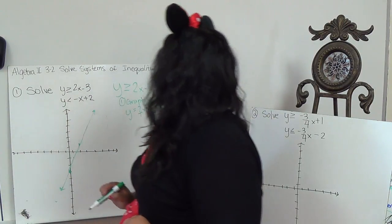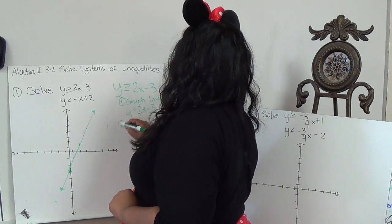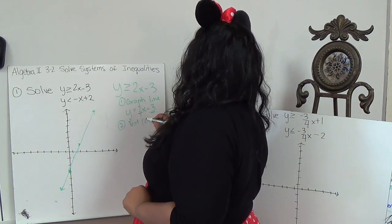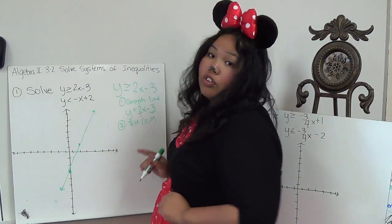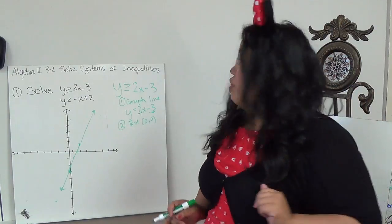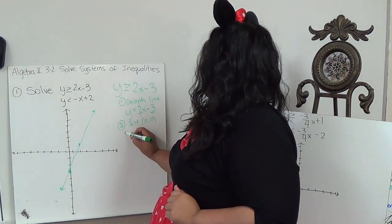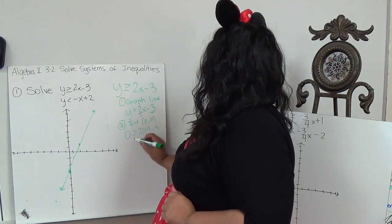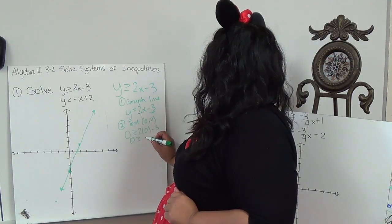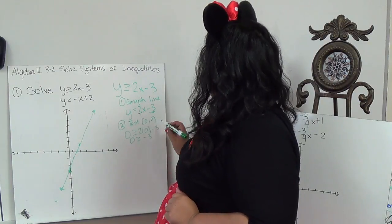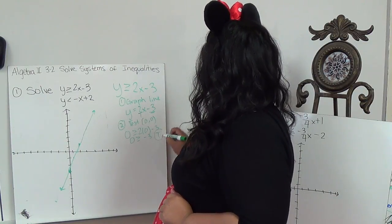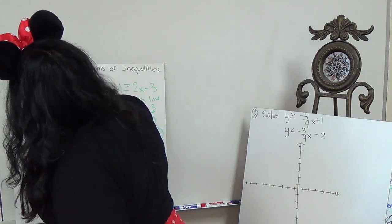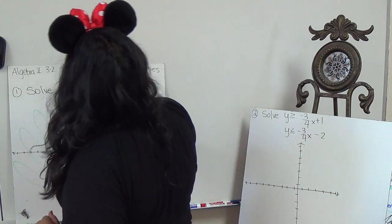So now it's a matter of the second step is to test. And because 0, 0 is not on there, I'm going to test 0, 0. And just like you remember, we're testing it into the original equation. So 0 is greater than or equal to 2 times 0 minus 3. 0 is greater than or equal to negative 3. This is true.